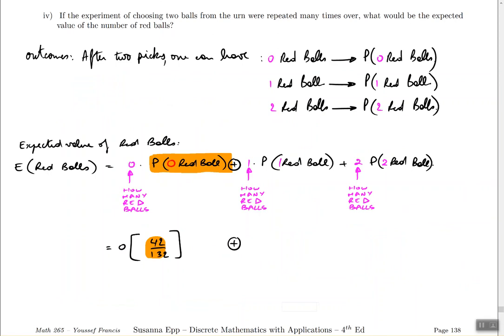Now we need to add to it one times the probability of getting a single red ball. A single red ball can happen from either choosing the first red ball and the second gray ball, or vice versa, choosing a gray ball on the first choice and getting a red ball on the second choice. Let's look at our tree and figure out what those probabilities are.